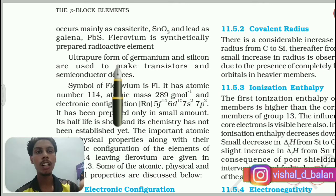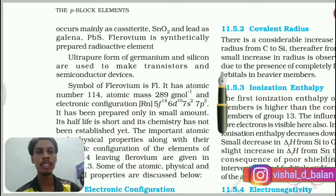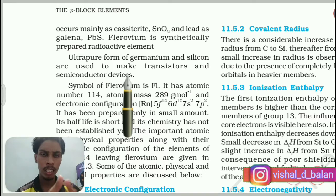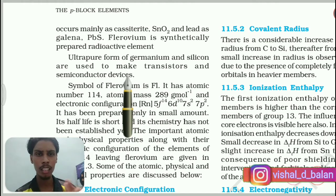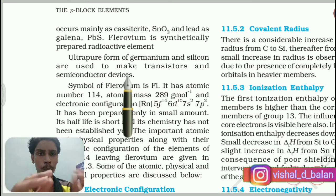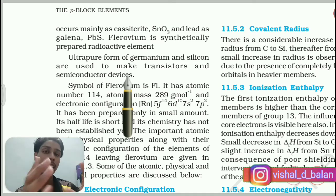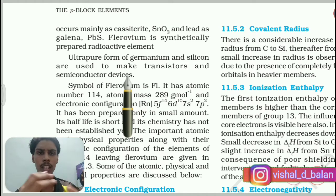Ultra-pure forms of germanium and silicon are used to make transistors and semiconductor devices, which you already know from physics. Ultra-pure germanium is used because purity increases conductivity — this is called doping.